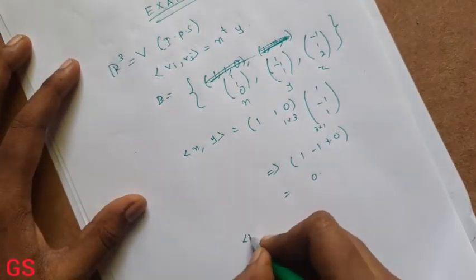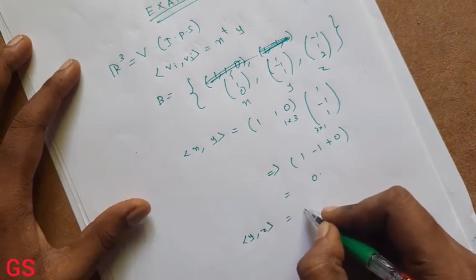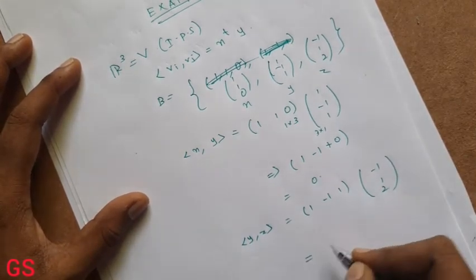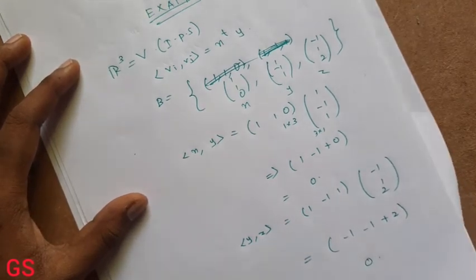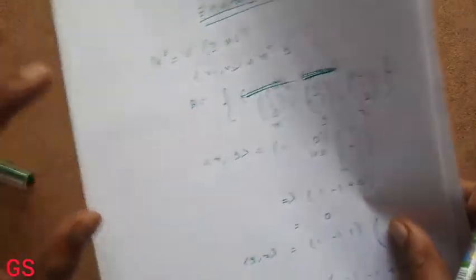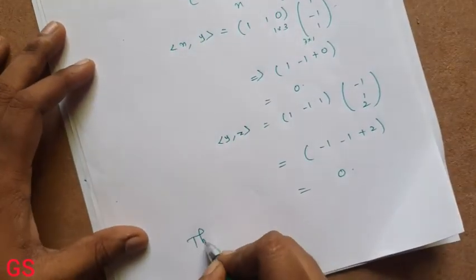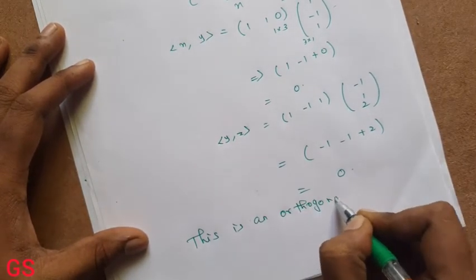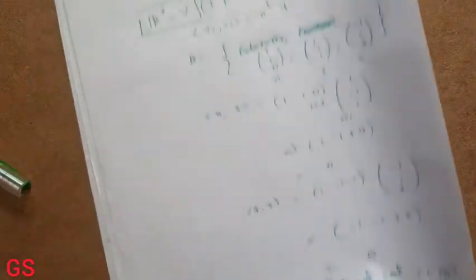Next, Y·Z: Y transpose times Z — (1, -1, 1) transpose times (-1, 1, 2) — so minus 1, minus 1, plus 2 — that is minus 2 plus 2 = 0. Correct. So X·Y = 0, Y·Z = 0. You can see the combination. Z·X — it is orthogonal. This is an orthogonal set.